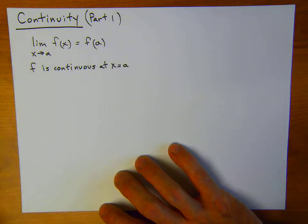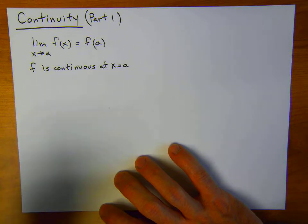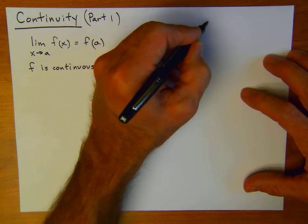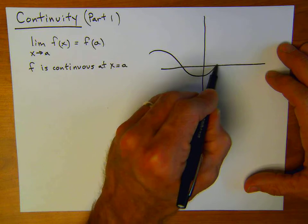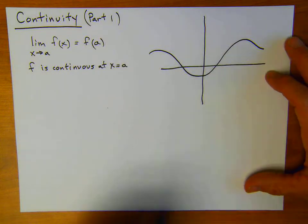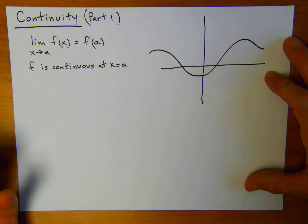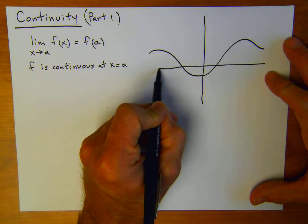An intuitive, graphical way to think of this is that if you can draw the graph of the function without taking your pencil off the paper — for example, if you have something like this and you can draw the graph of it and never lift your pen off the paper — then the function is continuous. That's just an intuitive, graphical way of thinking of it.